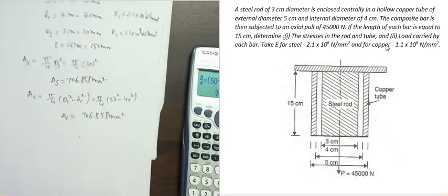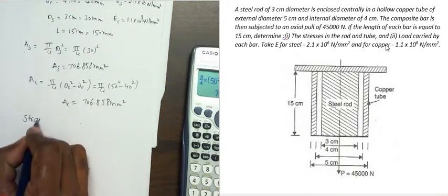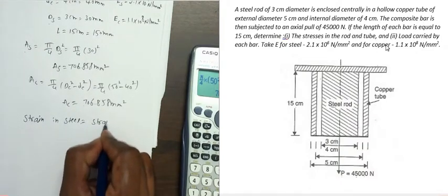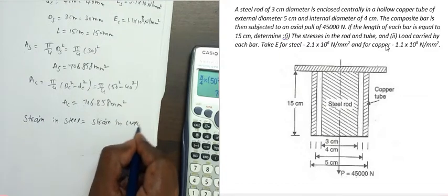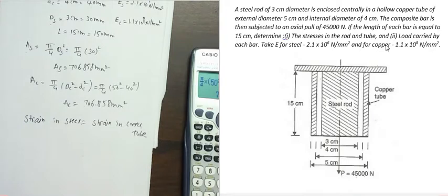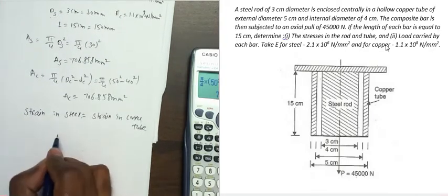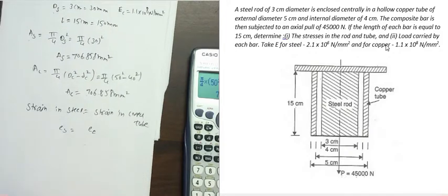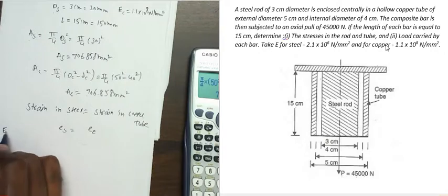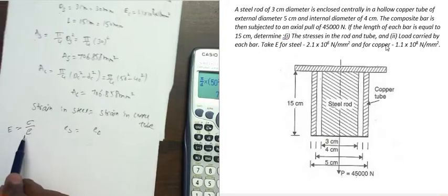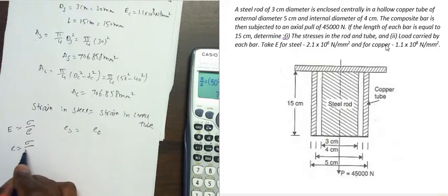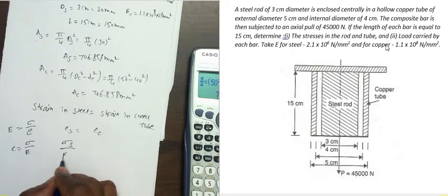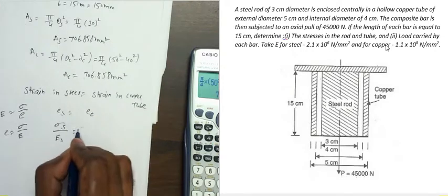Now we apply two conditions. The first condition is: strain in steel is equal to strain in copper tube. Strain in steel equals strain in copper tube, i.e., eS = eC. We know that Young's modulus E equals stress divided by strain, so strain equals stress divided by Young's modulus. Therefore, σS/ES = σC/EC.